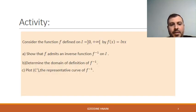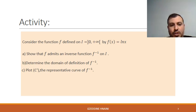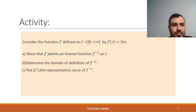Activity: Consider the function f defined on (0, +∞) by f(x) = ln(x). Show that f admits an inverse function on i. Determine the domain of definition of the inverse. Plot C', the representative curve of f⁻¹.